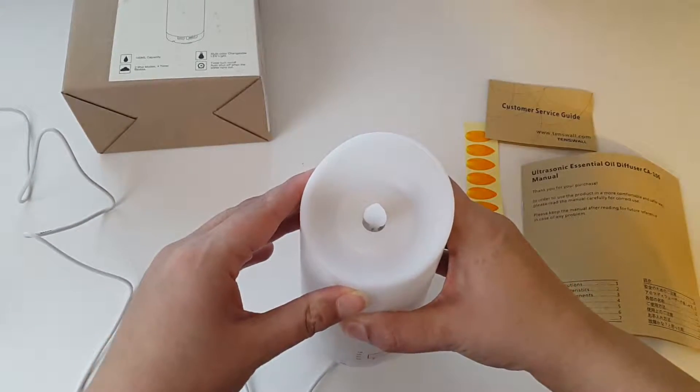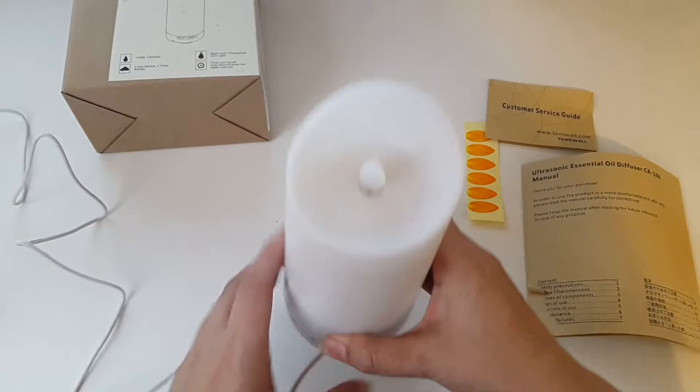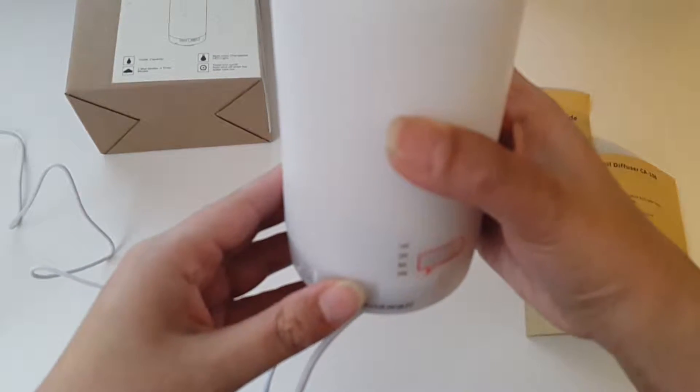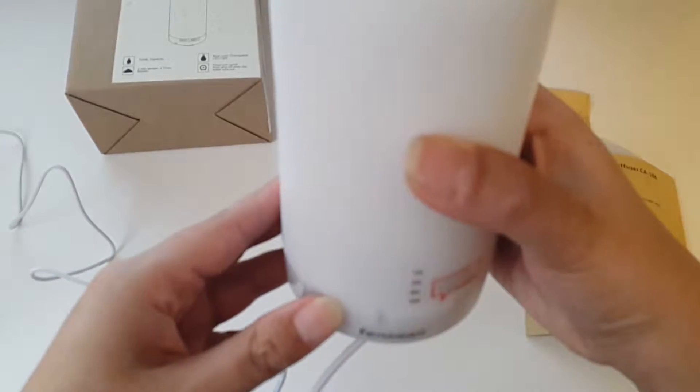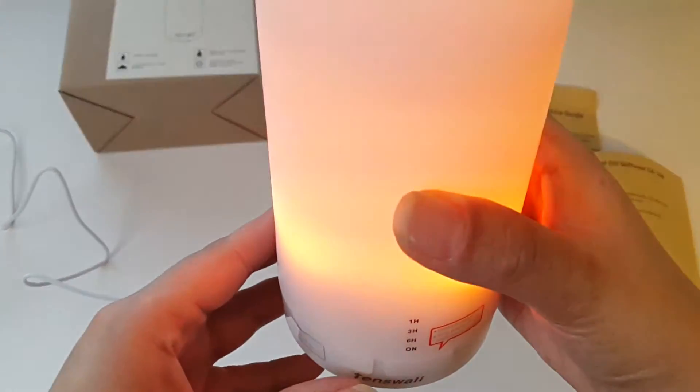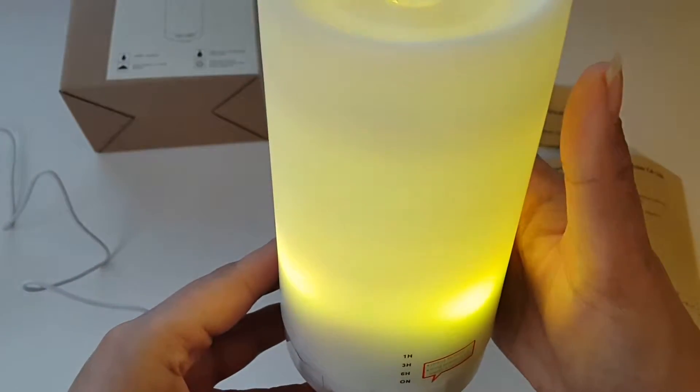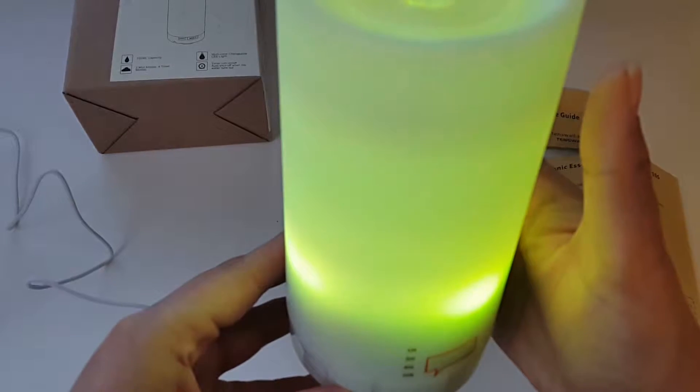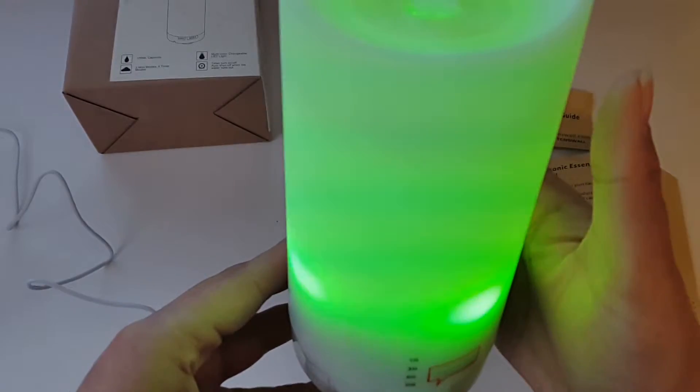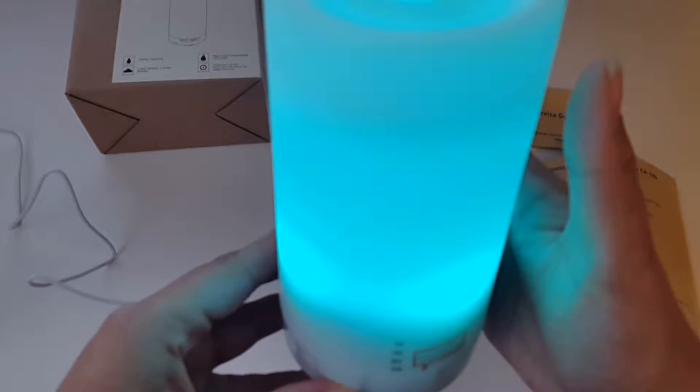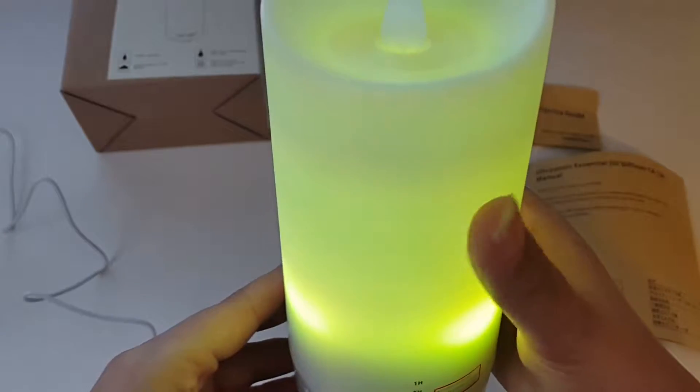And that is all you need to do. Okay, so here are all the buttons that you need to be playing around with. Press it once and you get your colors, so it changes colors every second or two. There are seven different LED colors. So if you want to keep just the one color, just tap this once to keep that color.